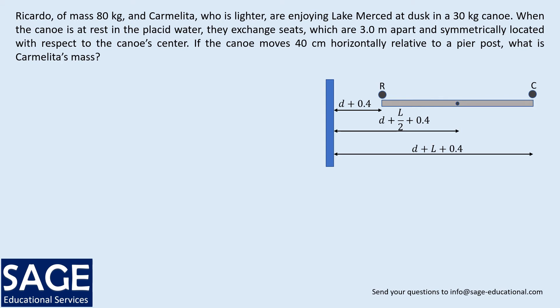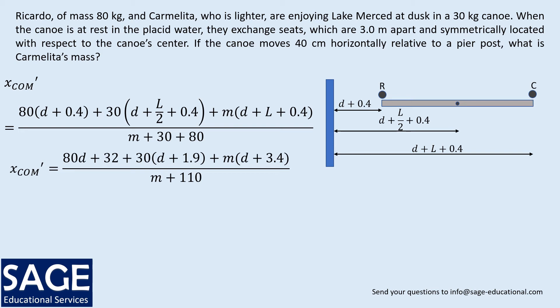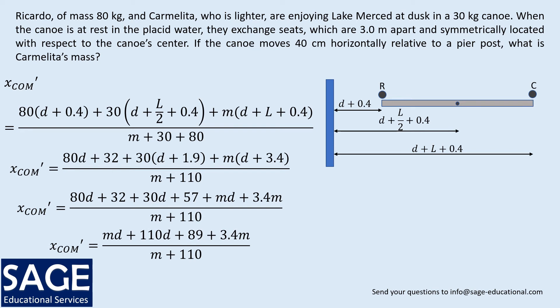This system now has a new center of mass, x com prime. X com prime uses the same formula: m1 x1 plus m2 x2 plus m3 x3, divided by m1 plus m2 plus m3. Ricardo is 80 kilograms at distance d plus 0.4, the boat is 30 kilograms at distance d plus l over 2 plus 0.4, and Carmelita has unknown mass at distance d plus l plus 0.4, divided by m plus 110. Substituting l equals 3 meters simplifies this into a new expression for the new center of mass.